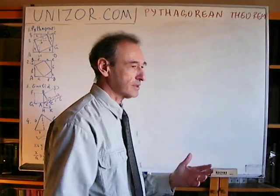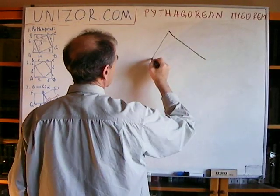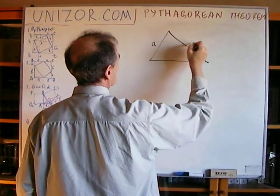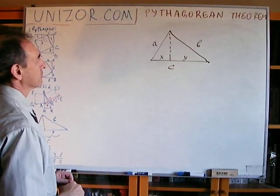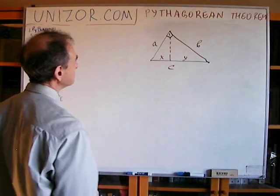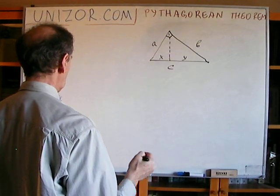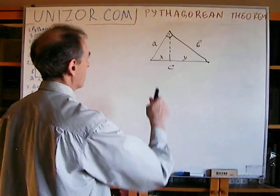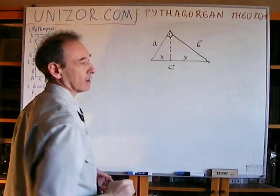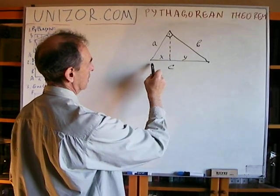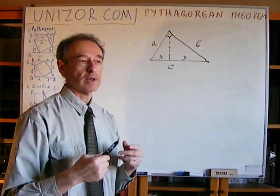Now let's not be afraid to use some algebraic methods. I'm going to introduce one of the most simple cases. This is our right triangle, with the right angle here. Let's consider a very simple fact: the big triangle and both smaller triangles — formed by drawing an altitude to the hypotenuse, dividing it into segments x and y — are all similar triangles.